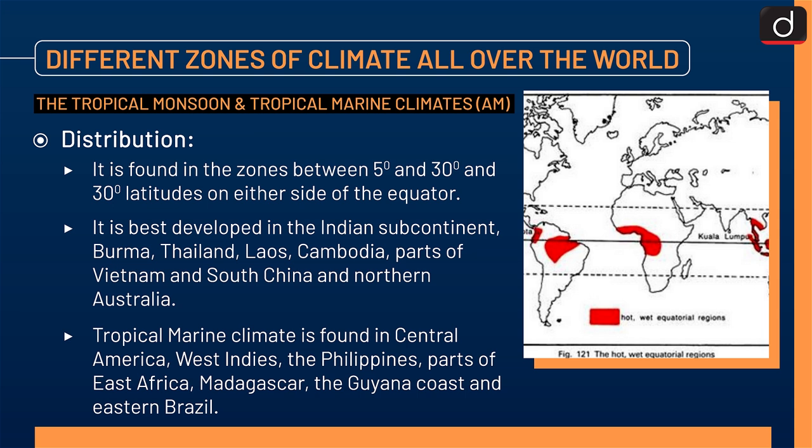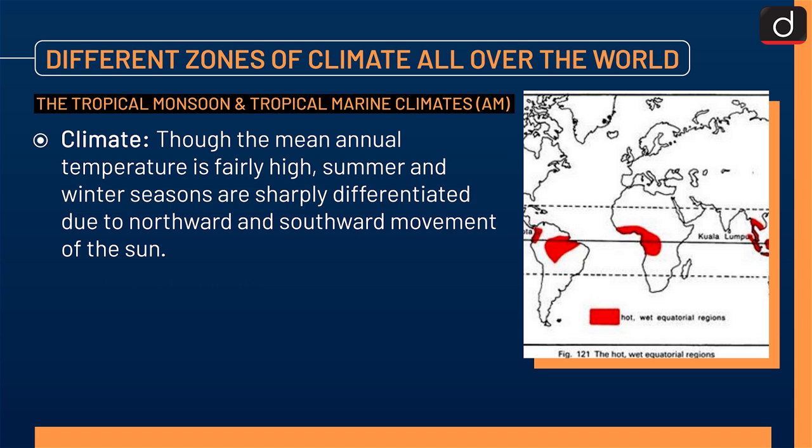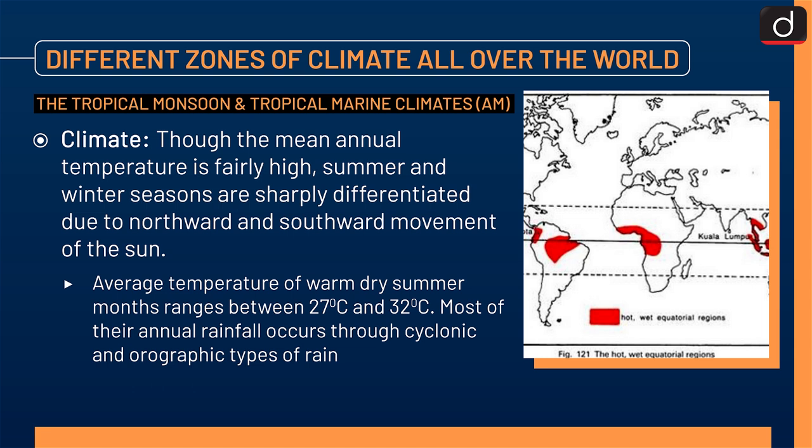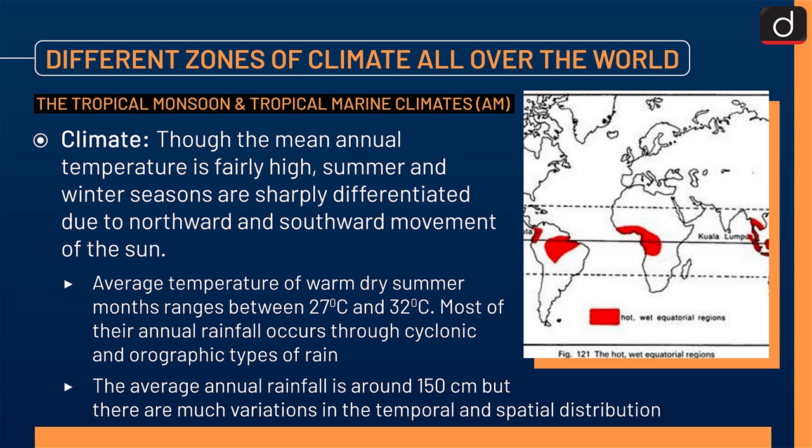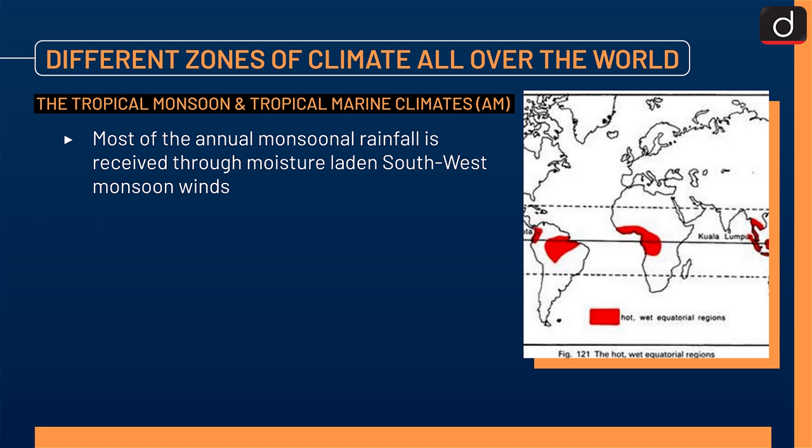Regarding climate, though the mean annual temperature is fairly high, summer and winter seasons are sharply differentiated due to the northward and southward movement of the sun. Average temperature of warm dry summer months ranges between 27 degrees Celsius and 32 degrees Celsius. Most of the annual rainfall occurs through cyclonic and orographic types of rain. The average annual rainfall is around 150 cm, but there are much variations in the temporal and spatial distribution. Most of the annual monsoonal rainfall is received through moisture-laden south-west monsoon winds.